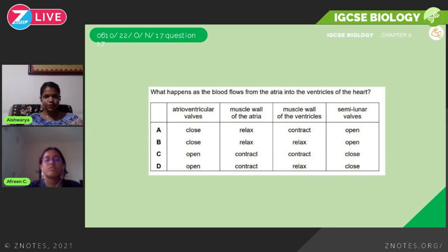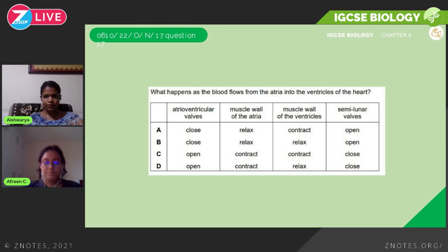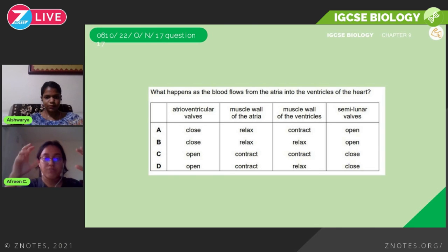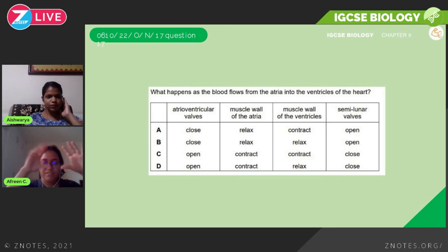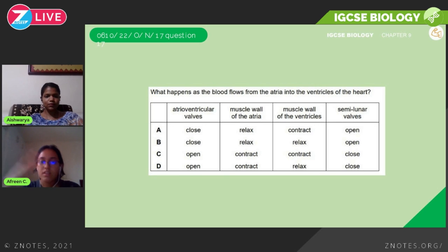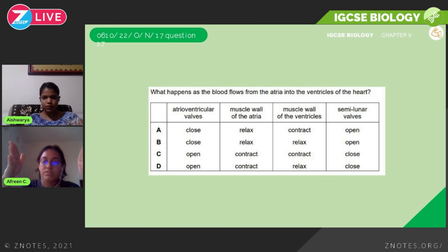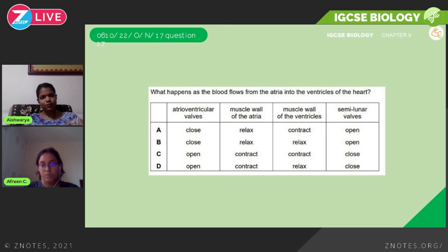Let's look at some exam questions. October/November 2017: 'What happens as the blood flows from the atria into the ventricles of the heart?' The atrioventricular valves should open to allow the movement. The atria muscle walls need to be contracted. The ventricle muscle walls must relax — if the atria are contracting, the ventricles must relax. So the answer is option D; semilunar valves must also be closed to prevent backflow.